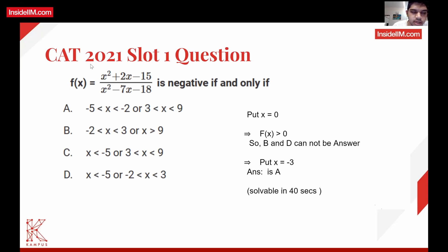This is the first question from slot one of this year's CAT paper. The first thing that comes to mind when you see this question is: if this should be negative, then the numerator should be positive and denominator should be negative, or vice versa. If we solve it in the regular way, you'll have to graph it and find the ranges where both those conditions are satisfied.